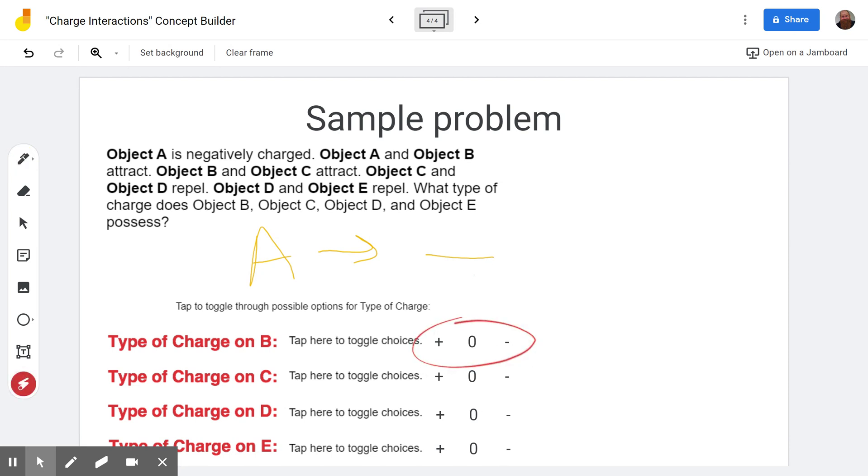You can see you start out with some information here. Object A is negatively charged, so we know that A is negative. You can see I've written in here choices for each of them so we can eliminate them as we learn. First we see object A and B attract, we'll skip that for now. B and C attract, we'll skip that for now. C and D repel. So the first thing we do, like I mentioned on the last slide, C and D repel, that means we should eliminate: C and D cannot be neutral.